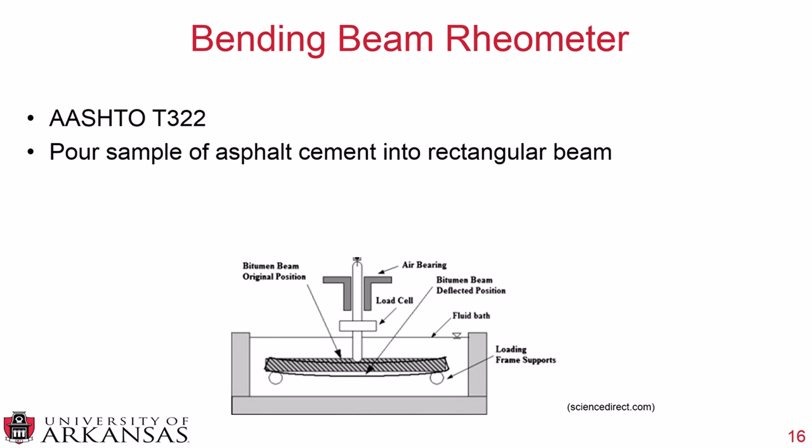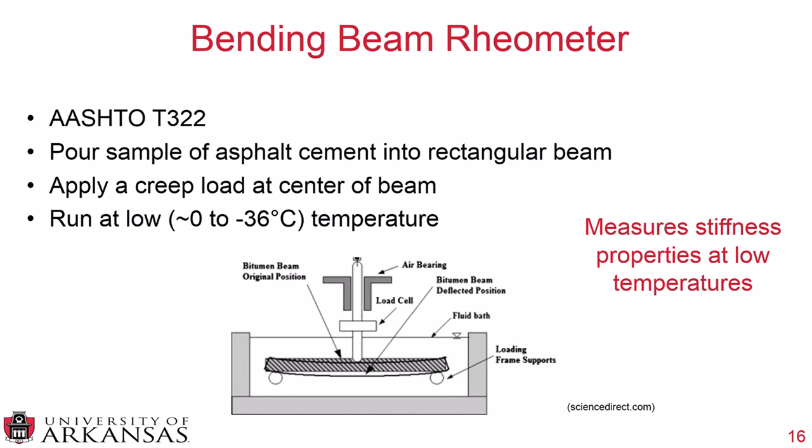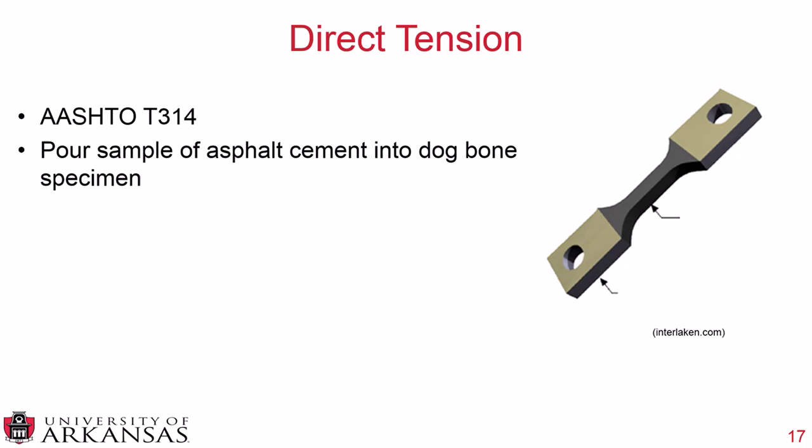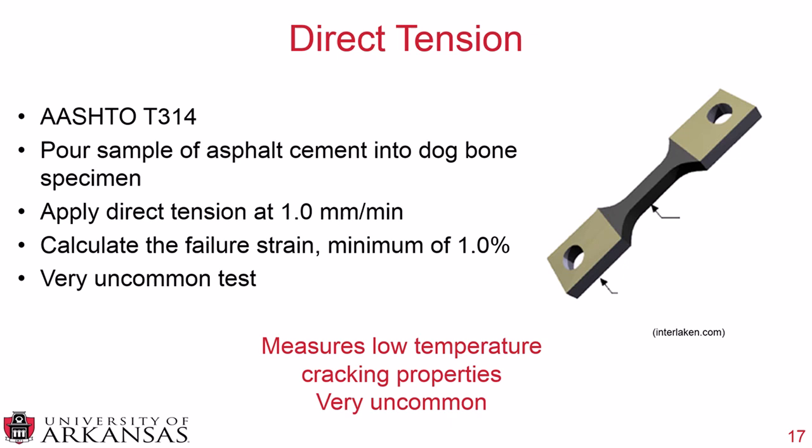The bending beam rheometer (BBR, AASHTO T322) pours asphalt binder into a rectangular beam, applies a creep load at the center at low temperatures (approximately 0 to -36°C), and measures stiffness properties. The direct tension test (AASHTO T314) pours asphalt binder into a dog-bone specimen and applies direct tension at 1 mm/min, with a minimum required failure strain of 1%. The direct tension test is very uncommon and is not really used today.